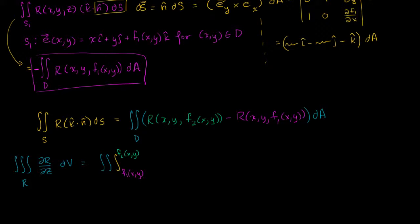And I'm going to integrate the partial of r with respect to z. So partial of r with respect to z, and then I have dz. Then I'll have to integrate with respect to y and x, or with respect to x and y. I can just write that as dA.